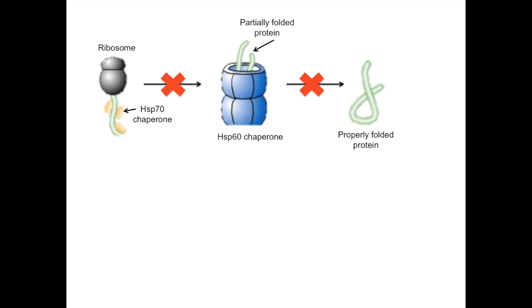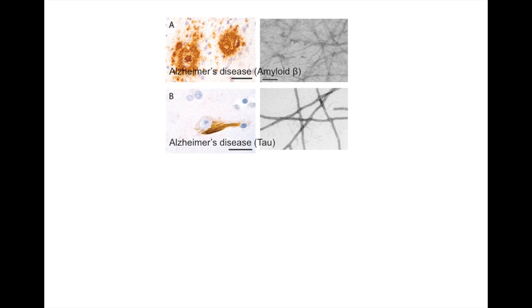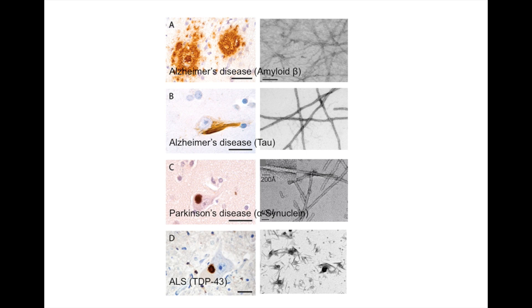A breakdown in this proteostasis network can cause the formation of amorphous aggregates or amyloid fibrils, leading to many human neurodegenerative diseases, including Alzheimer's disease, Parkinson's disease, and ALS.